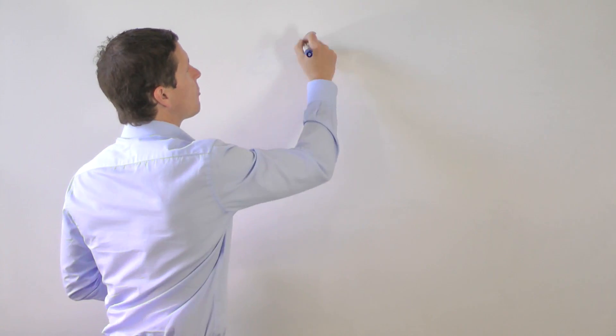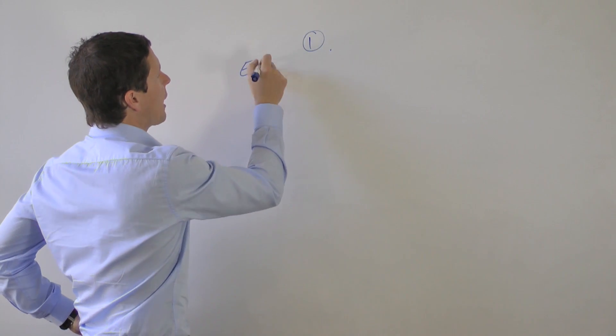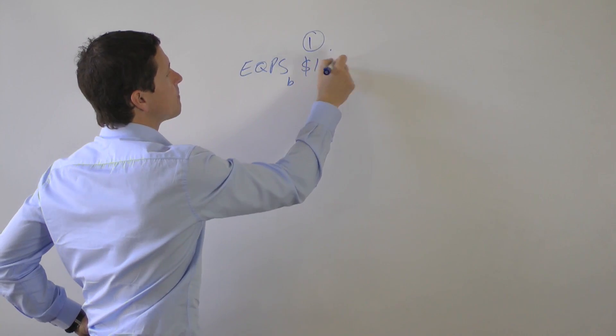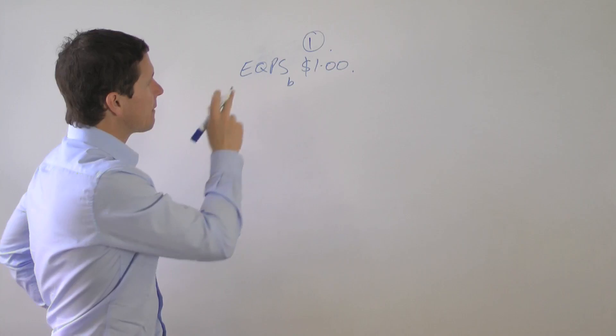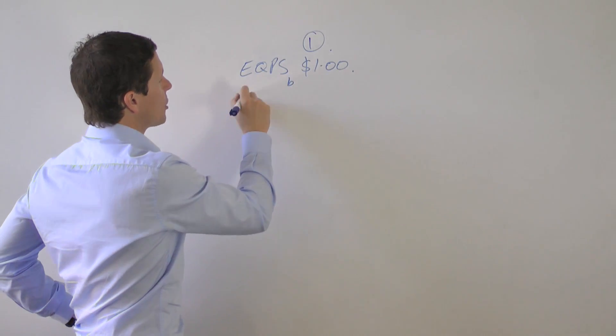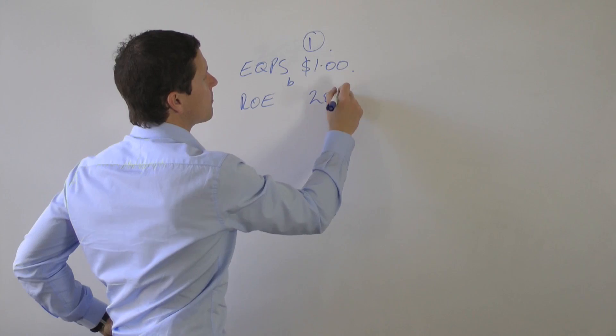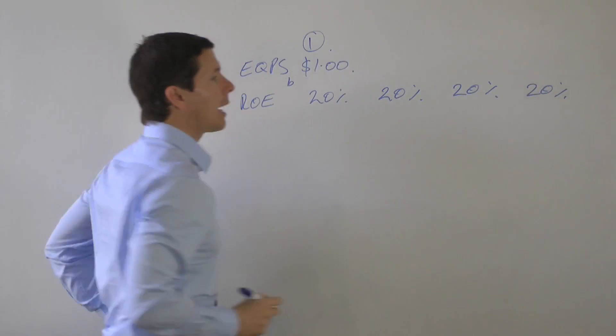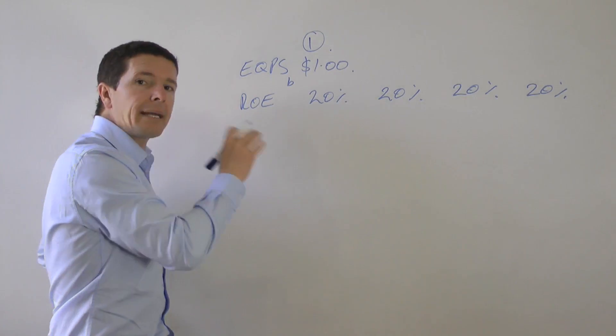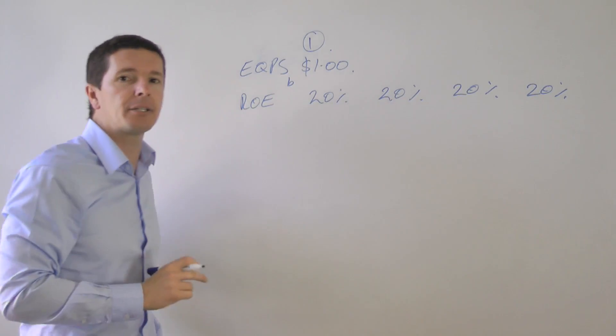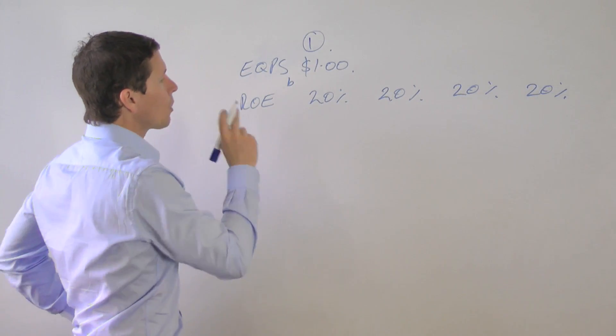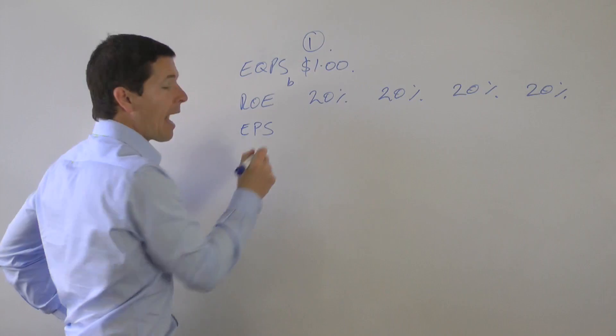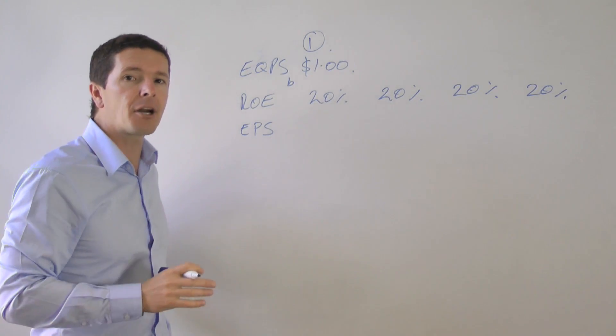Imagine for a moment it's year one and we have a company with equity per share at the beginning of one dollar. Let's also assume that this company generates a return on equity every year of 20 percent. We'll make the important assumption that that doesn't change. We'll also assume that the company pays no dividends at all. Its payout ratio is zero.